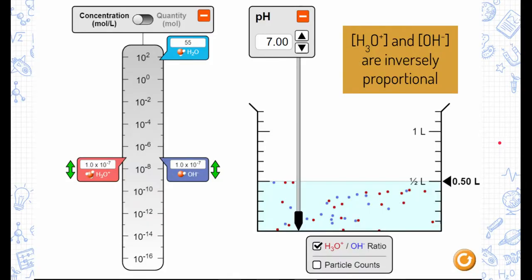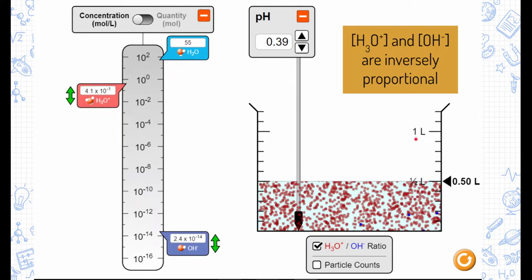We can see that here in this simulation. We have a solution over here and the pH is neutral, meaning we have equal concentrations of both. Now, what I'm going to do is I'm going to increase the concentration of hydronium. Notice when I do that,